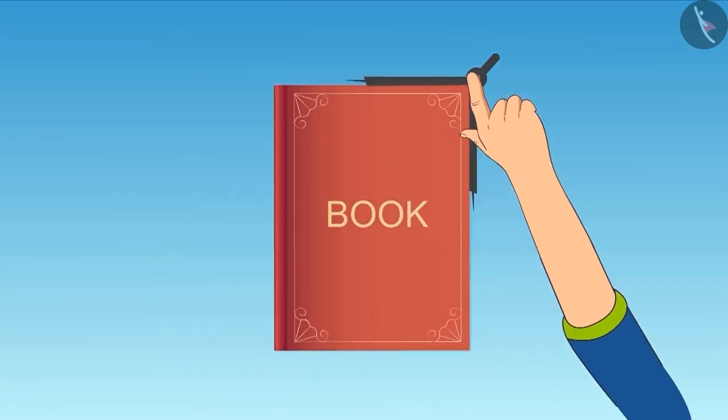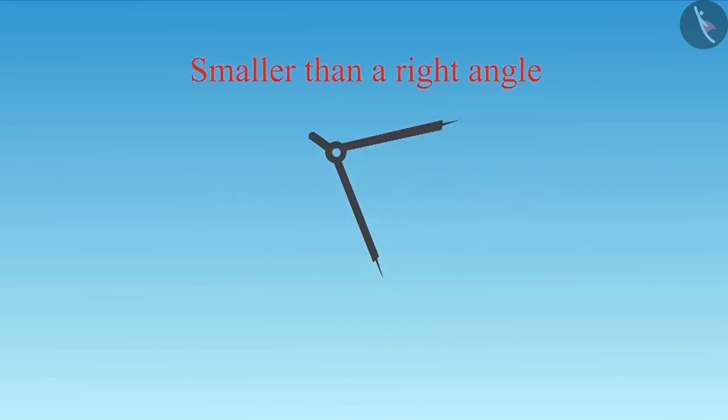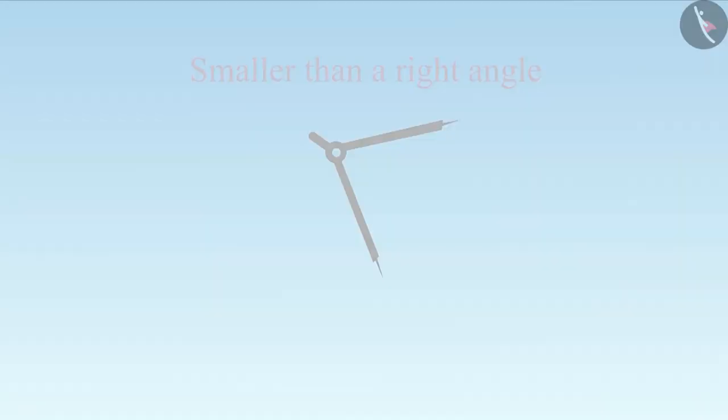See, the divider was as open as the measurement of the right angle before. Then to measure this angle, we had to slightly reduce the distance between the two sides of the divider. This means that this angle is smaller than a right angle.